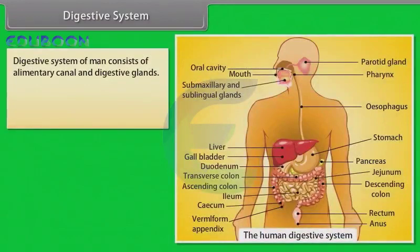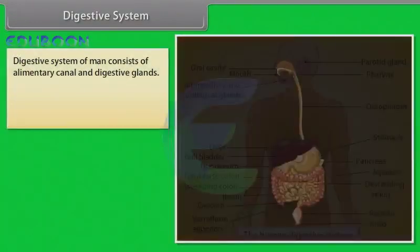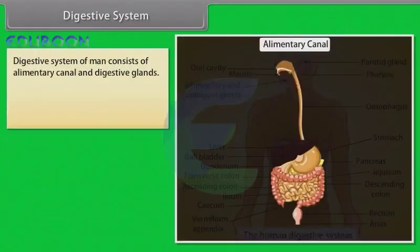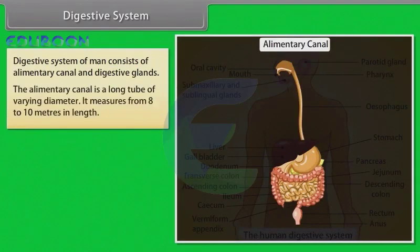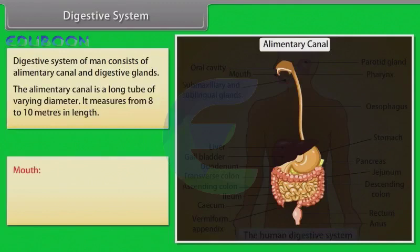The digestive system of a human consists of the alimentary canal and digestive glands. The alimentary canal is a long tube of varying diameter. It measures from 8 to 10 meters in length. The first part of the alimentary canal is the mouth.